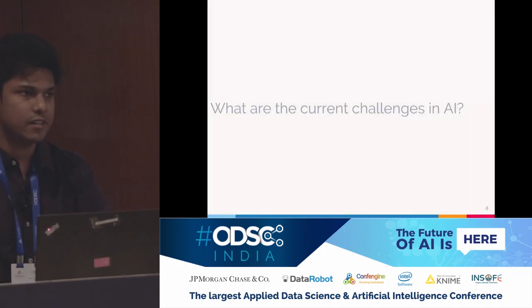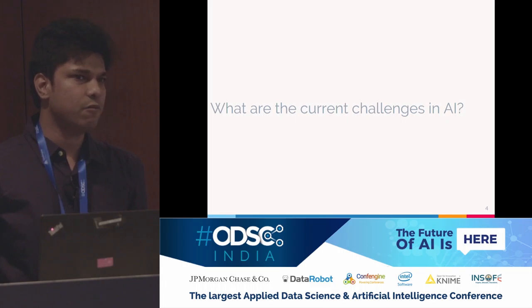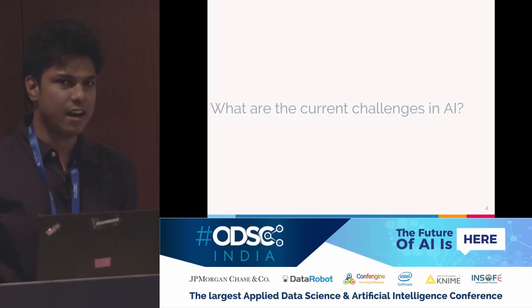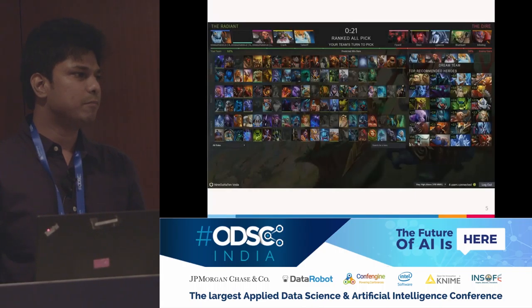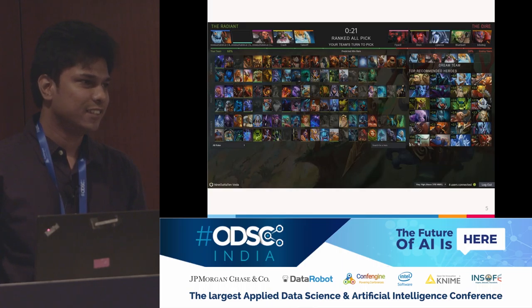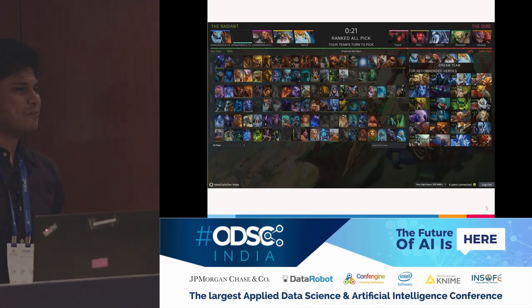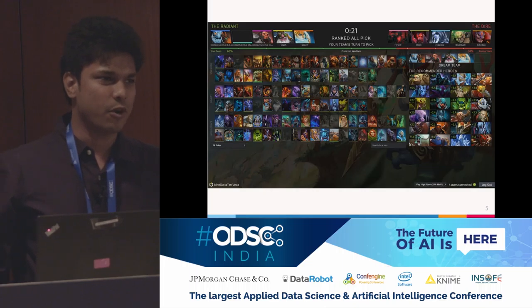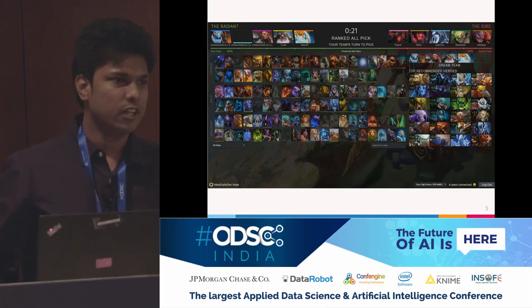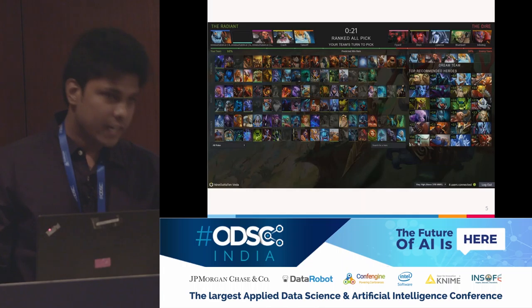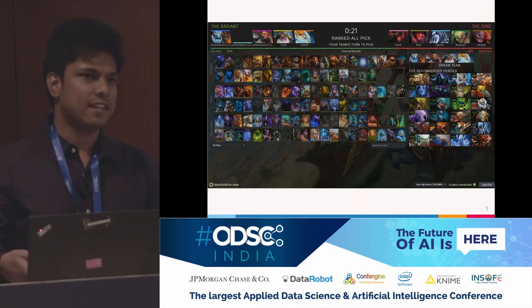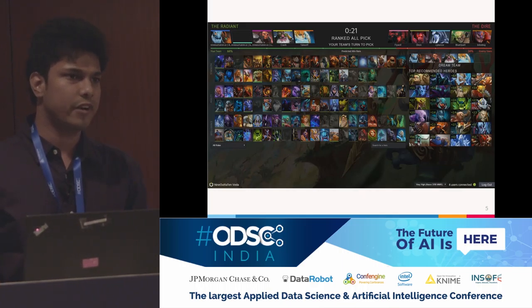To understand reinforcement learning, first you have to understand what challenges exist in artificial intelligence. How many people recognize this screen? Few people. So this is from a very popular game called Dota 2 — an online multiplayer real-time strategy game. It's very popular and has something like a World Cup called The International, which has a prize pool of over 20 million dollars.